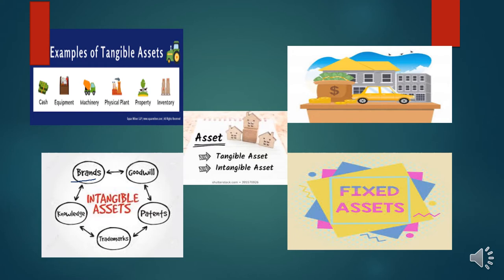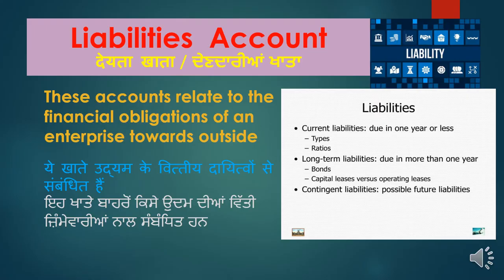All such tangible asset accounts are part of asset accounts. Next is the liability account. These accounts relate to the financial obligations of the business. Whether it is current liabilities, long-term liabilities, or contingent liabilities — creditors, bills payable, and all such liabilities are included under the liabilities account. All accounts representing the debts and obligations of the business are included in the liability account.